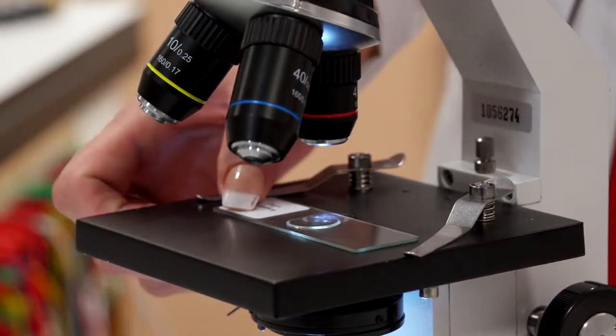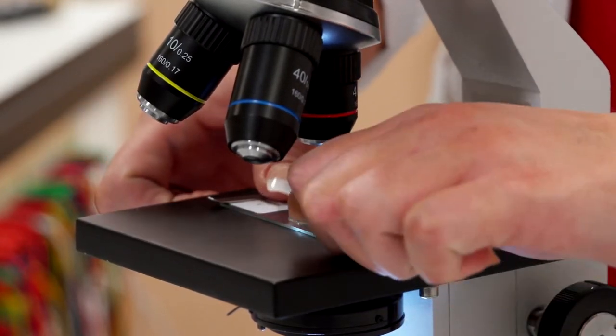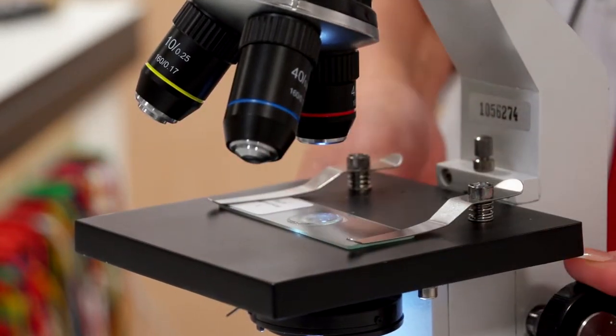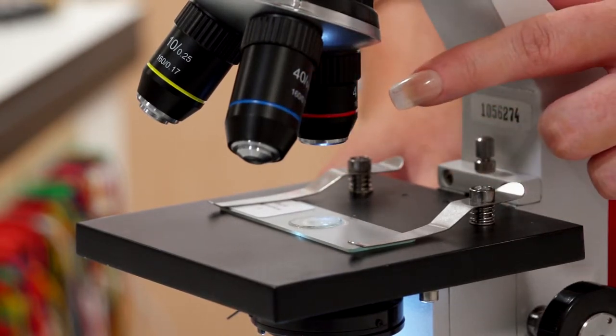So to view a slide, place your slide on the stage and hold it in place with the stage clips. Make sure your stage is at the lowest point using the rough focus wheel. Make sure your lamp is on and that your objective lens is at the lowest setting. Then view through the eyepiece to see your specimen.